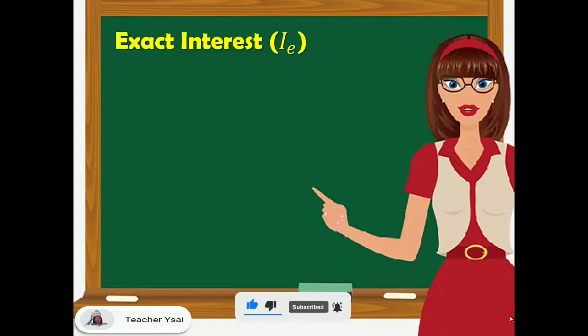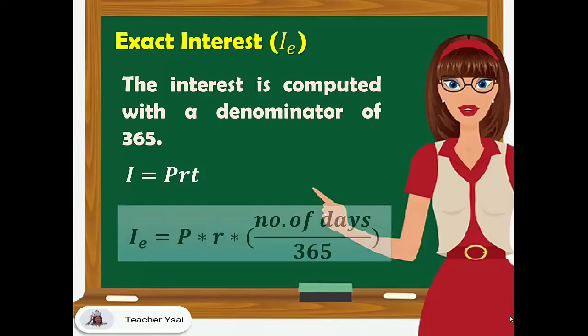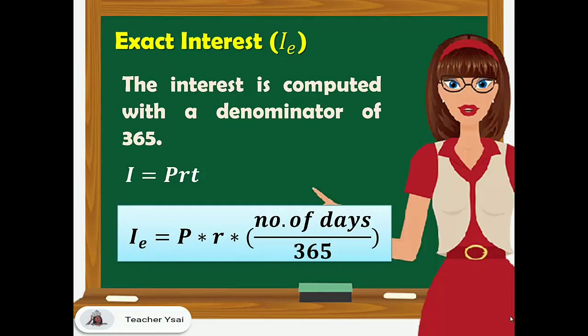For exact interest, the interest is computed with a denominator of 365. Going back to the formula in solving for simple interest, we have I equals PRT. To solve for exact interest, we have the formula: I sub E equals P times R times number of days over 365. Where I sub E stands for exact interest, P for principal amount, R for the rate, and T stands for the time or the number of days over 365.